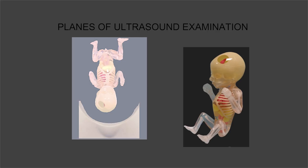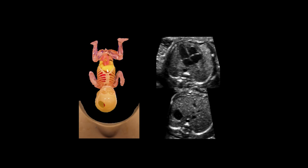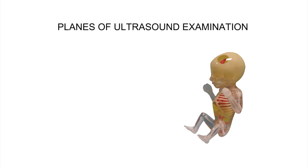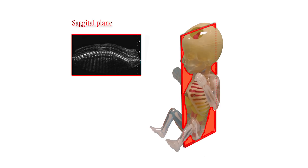Before we start, let us briefly review the three planes in which we examine the fetus. The first plane, which you see in red, is the sagittal plane, which usually divides the fetus into right and left.